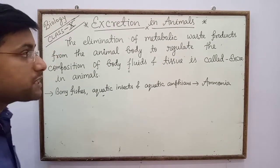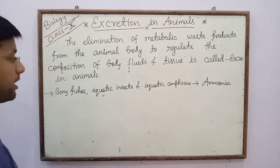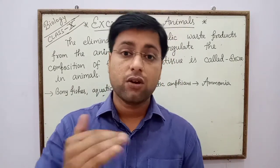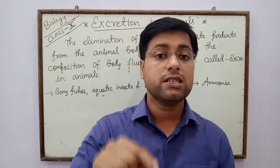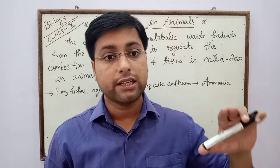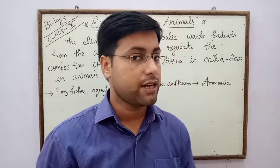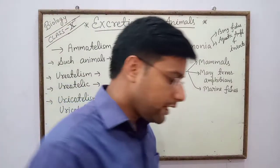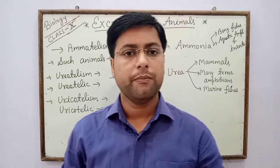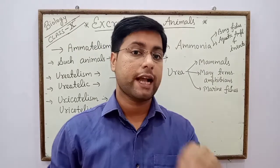The elimination of metabolic waste products from the animal body to regulate the composition of body fluids and tissues is called excretion in animals. Through metabolic processes — both anabolic and catabolic — many toxic substances are formed, and their elimination through a special excretory system is called excretion in animals. There are three categories of animals based on the type of excretory product they eliminate.